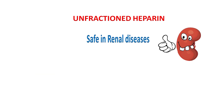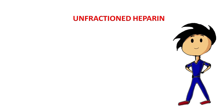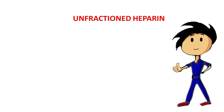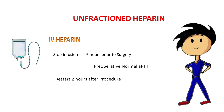Heparin is relatively safe in renal diseases; however, it can cause HIT or heparin-induced thrombocytopenia. Because of the shorter duration of action, management of patients under heparin is relatively straightforward. A patient under intravenous heparin infusion should have it stopped 4–6 hours before surgery with a preoperative normal APTT. It can be restarted after 2 hours; however, if the bleeding risk is high, it can be restarted after 24 hours.